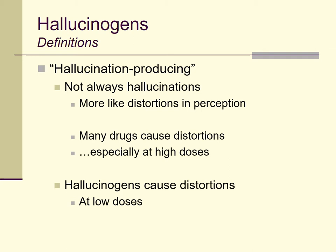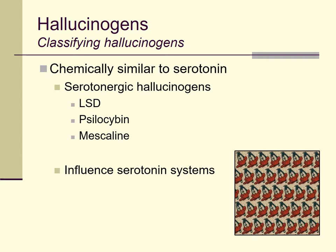So basic definitions: words like psychedelic and hallucinogen are used somewhat interchangeably. In a way they're not great names because they take us a little bit away from the reality of how these drugs work, but they're what we typically use. Now let's move on and talk about some of the different groups or classifications that we can apply to hallucinogens.